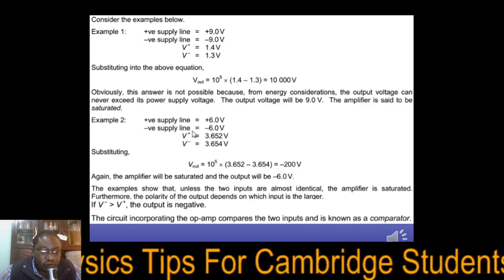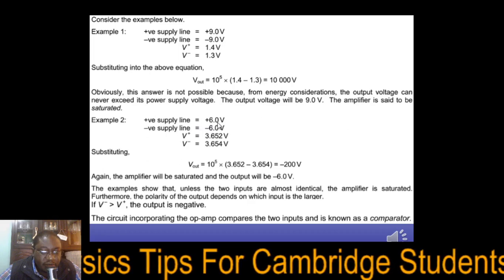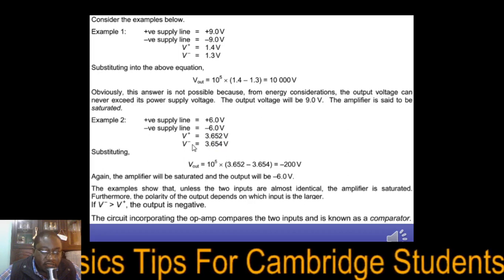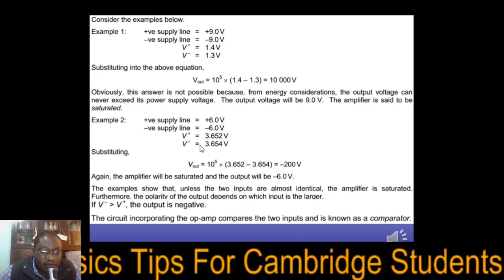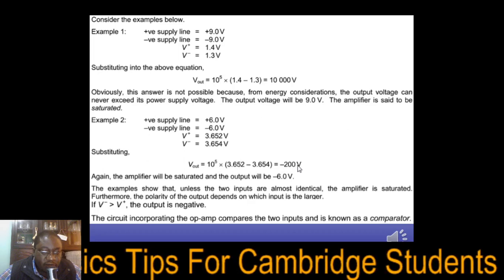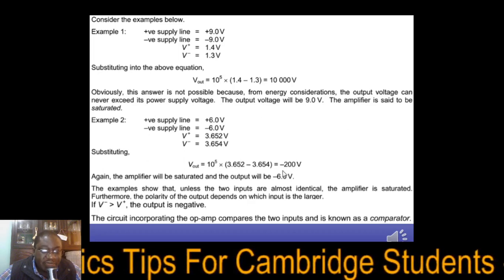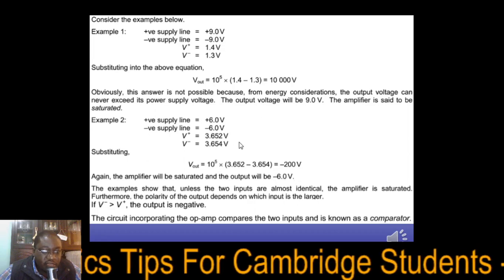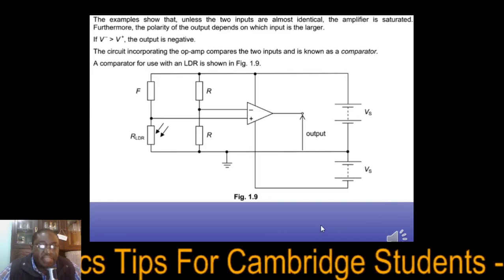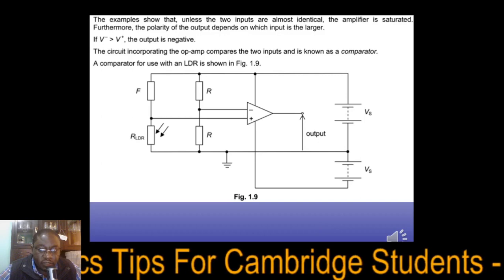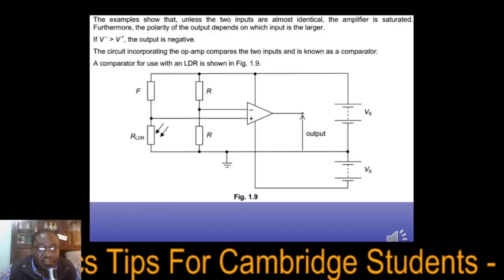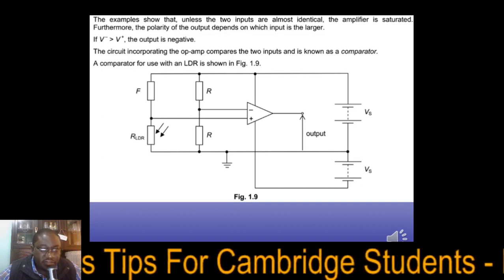Example two: if the positive supply line voltage is +6 V and the negative is −6 V, and V− through the inverting terminal is greater than V+, the amplifier would theoretically output −200 V, but it saturates at −6 V because that is what we are supplying. So: whenever V+ is greater than V−, the output saturates at the positive supply voltage; if V− is greater than V+, it saturates at the negative supply voltage.